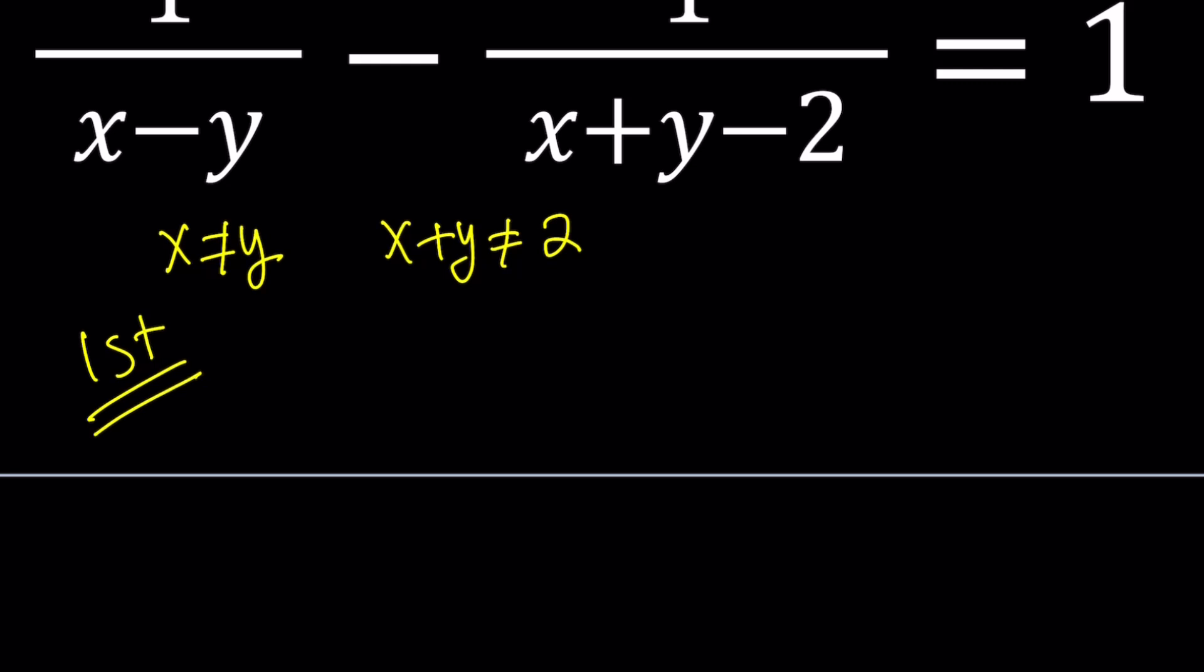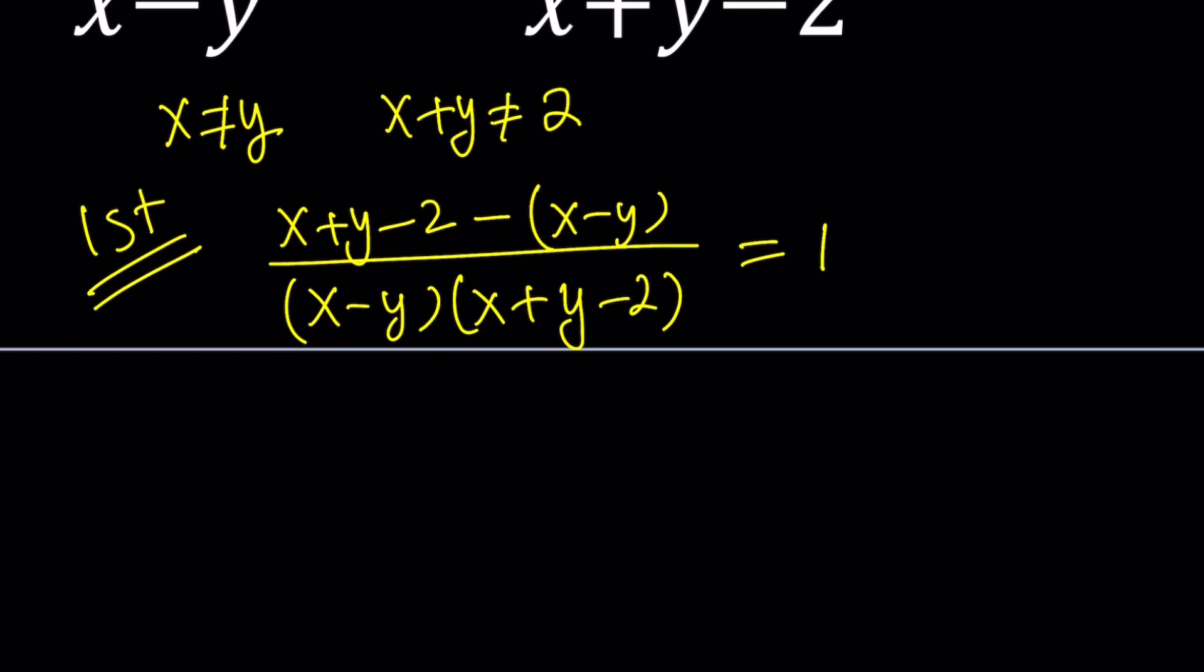For my first method, obviously, I'm going to make a common denominator. Let's go ahead and crisscross these. x plus y minus 2 multiply by the top, and then x minus y multiply by 1. And then the common denominator is just going to be the product, and it's equal to 1. Now let's go ahead and simplify the numerator. x minus x is equal to 0, so they're going to cancel out. And then we get y minus negative y, which is 2y.